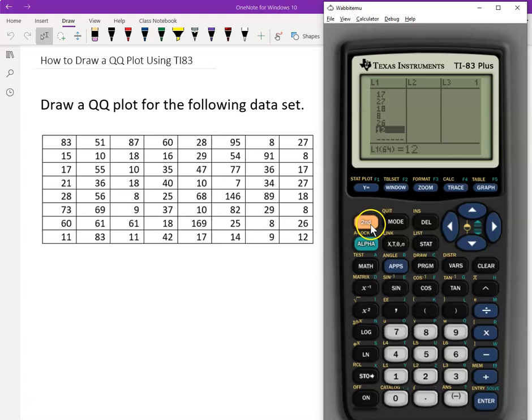Click second, y equals. Turn on a plot. And now it's off. So you need to set it on. So we choose on.